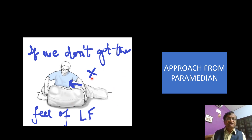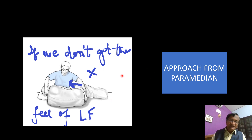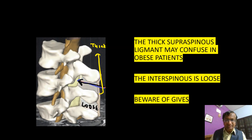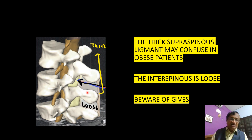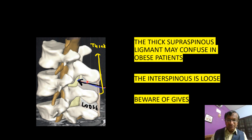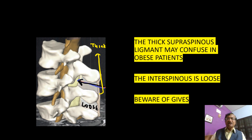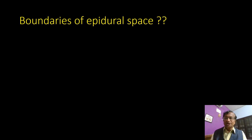Whether the approach is paramedian or median, it is very important to get the feel of the ligamentum flavum. In obese patients, the thick supraspinous ligament — which may be five centimeters — can confuse the operator, and the intraspinous ligament may be loose, giving false gives. So get the feel of the ligamentum flavum and then attach your loss-of-resistance syringe. Now, what are the boundaries of the epidural space?